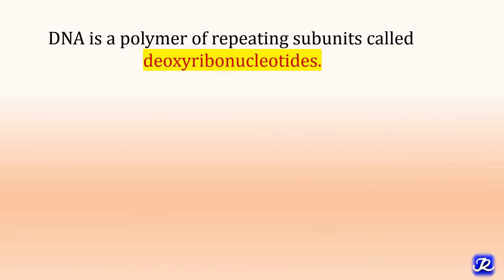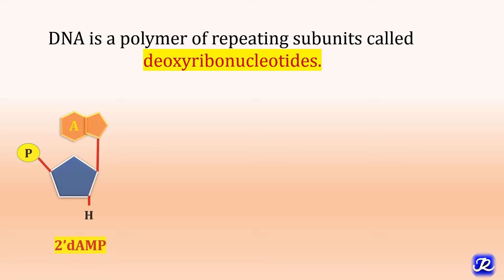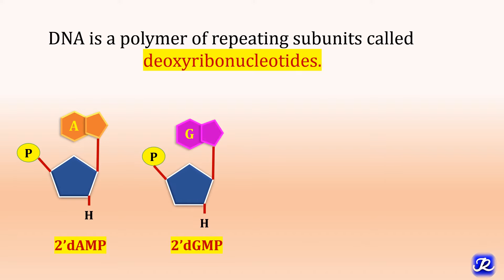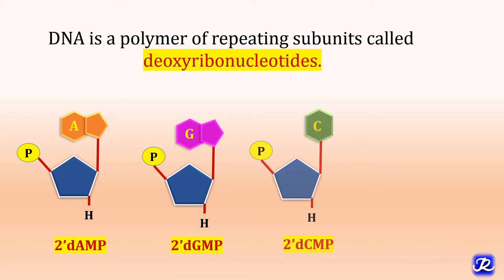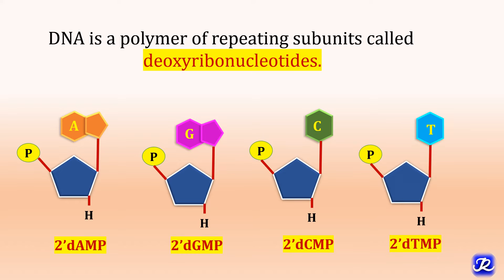DNA is a polymer of repeating subunits called deoxyribonucleotides. It has four types of deoxyribonucleotides. The first one is 2'-deoxyadenosine monophosphate, the second is 2'-deoxyguanosine monophosphate, the third is 2'-deoxycytidine monophosphate, and the fourth is 2'-deoxythymidine monophosphate.